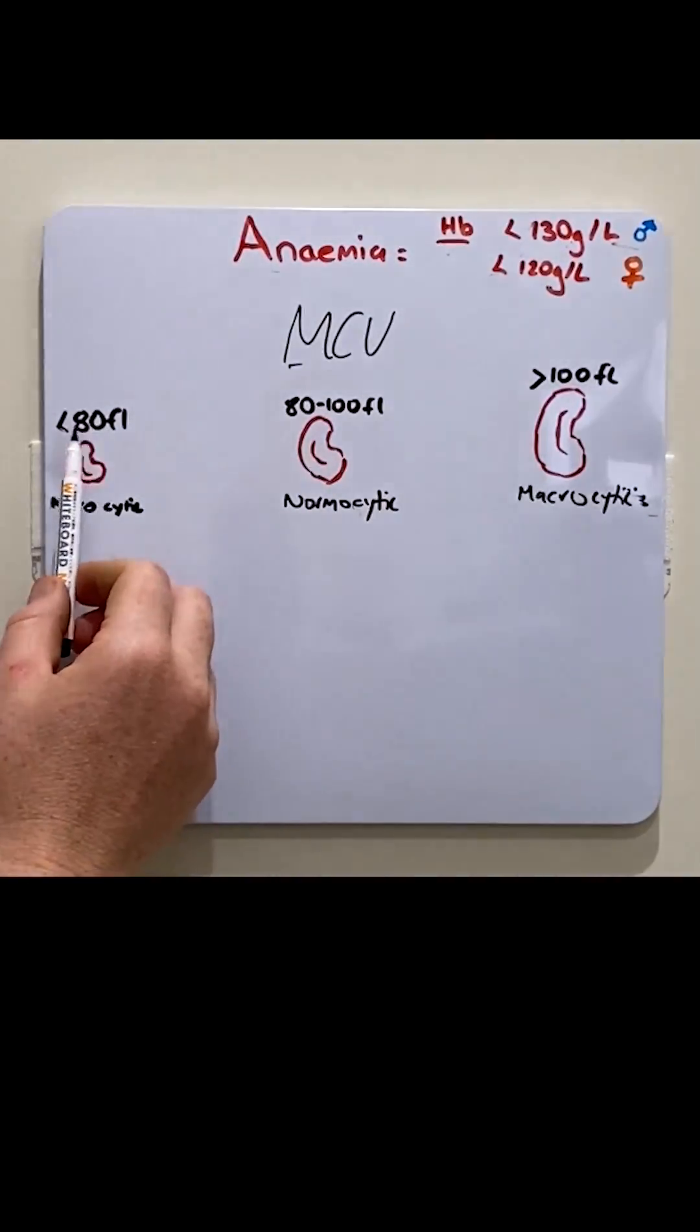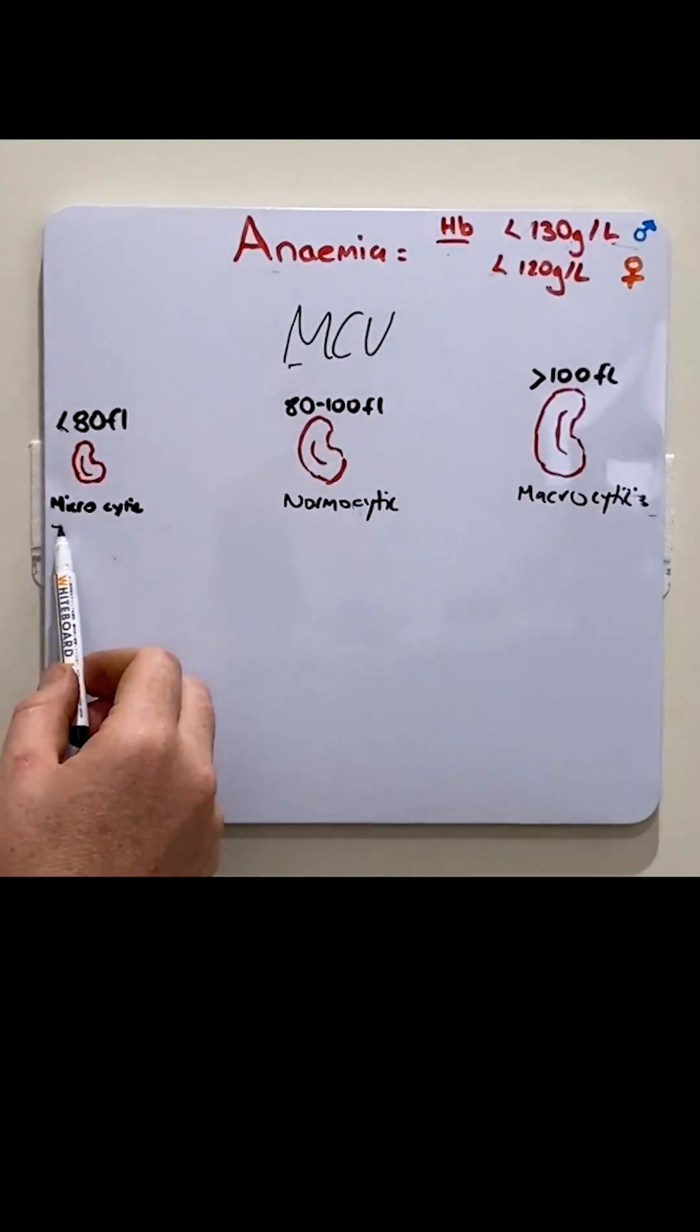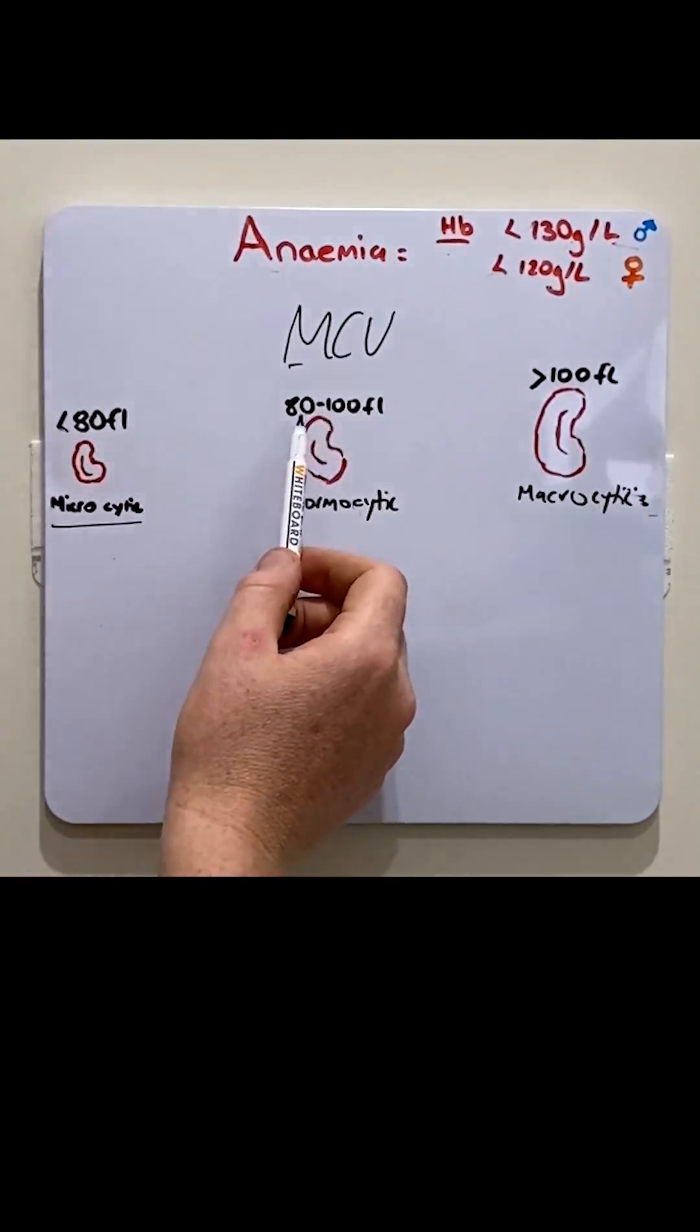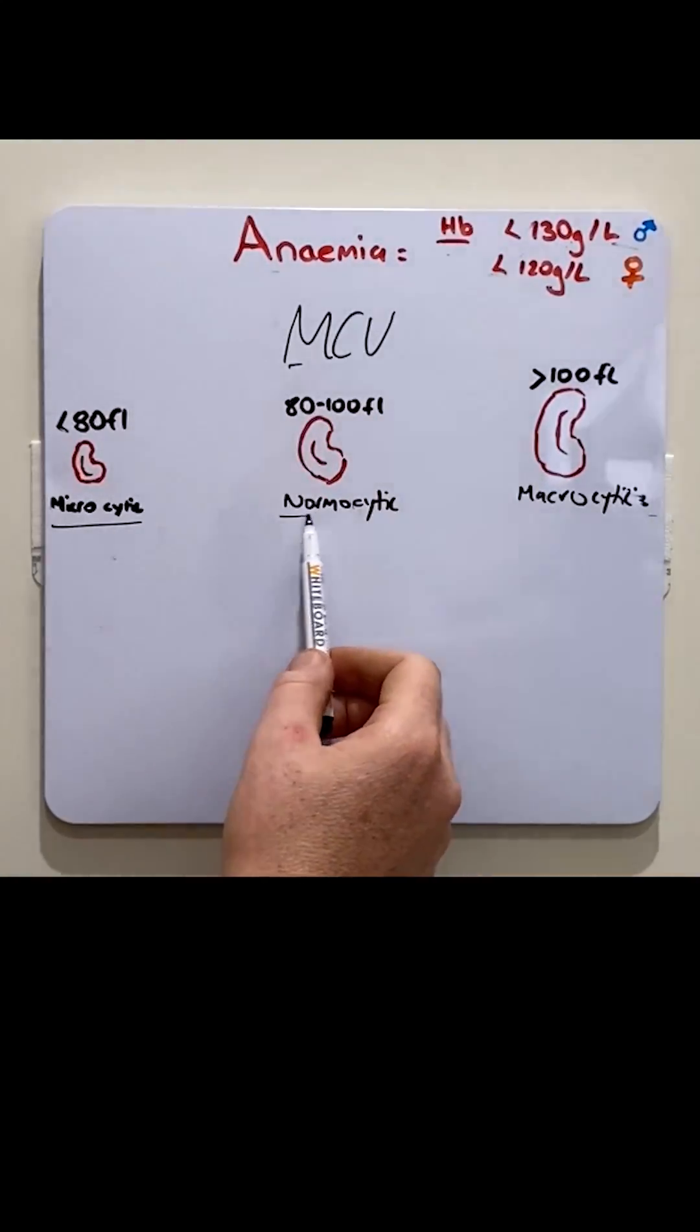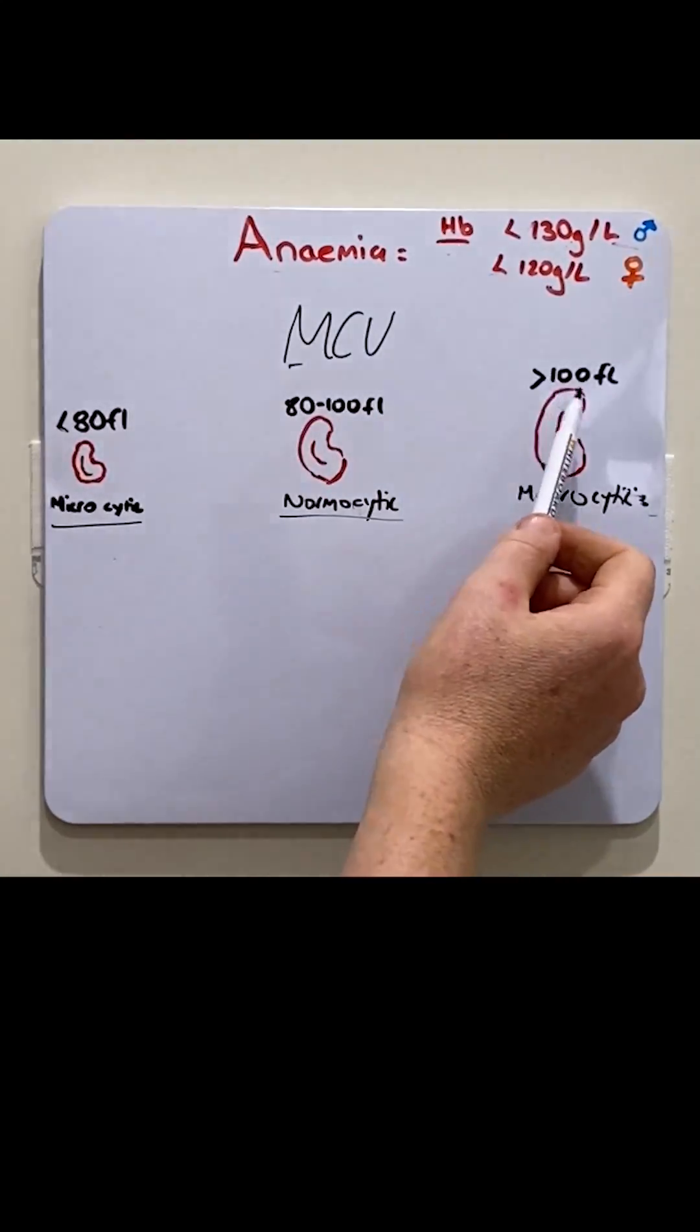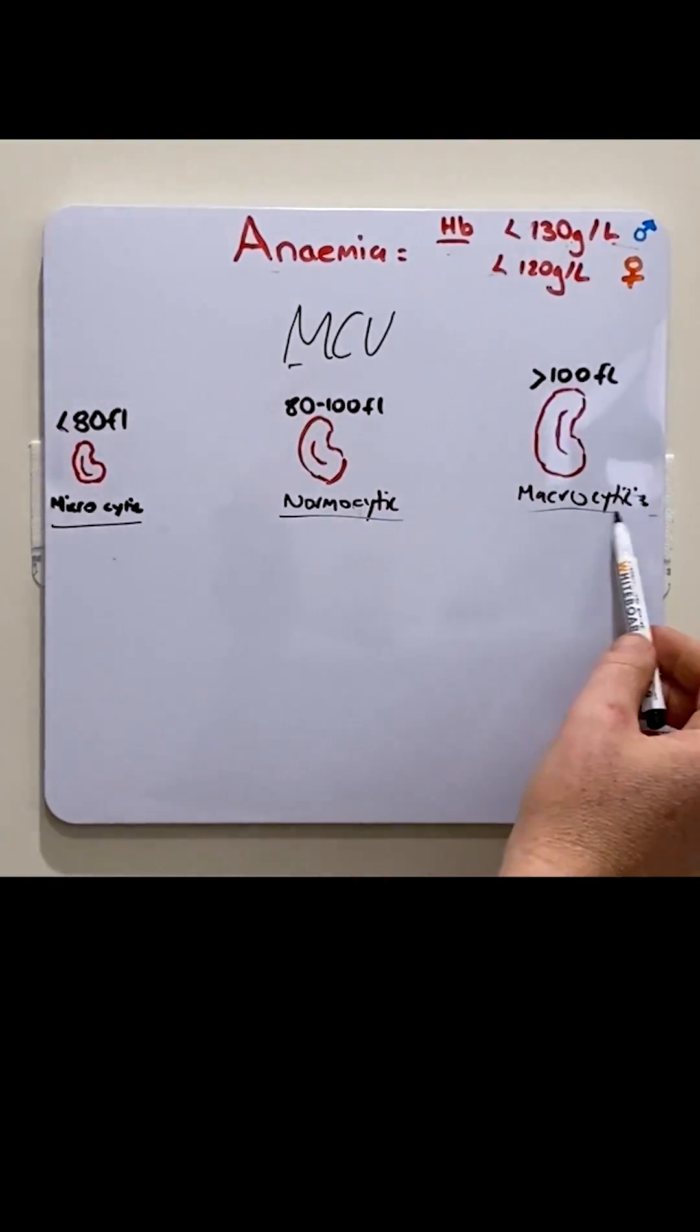If the average size of the red blood cell is less than 80 femtoliters, this is considered small and a microcytic anemia. If between 80 to 100 femtoliters, this is normal, a normocytic anemia. And if larger than 100 femtoliters, this is a macrocytic anemia.